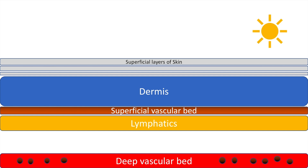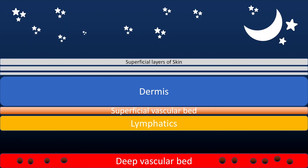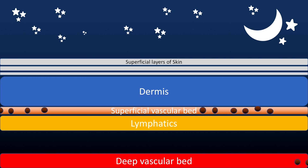During the day, the microfilariae — represented by these small dots here — are present in the deep vascular bed. However, at night, these microfilariae migrate from the deep vascular bed to the superficial vascular bed. Therefore, the diagnosis of filariasis depends upon collection or demonstration of microfilariae in the blood collected at midnight.